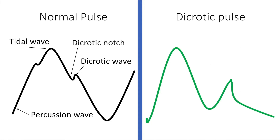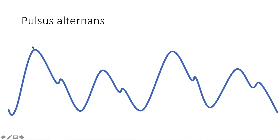The third type is the dicrotic pulse, and in this there are two peaks, but the second peak coincides with the dicrotic notch. The causes are enteric fever and cardiomyopathy. This is pulsus alternans — there is variation in the left ventricular outflow volume, causing a large wave from a lot of volume being ejected, and a small wave with less volume being ejected as a result of left ventricular failure. The pulse waveform alternates between small and large, giving it the name pulsus alternans.